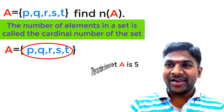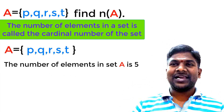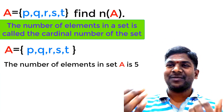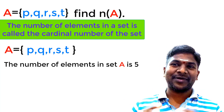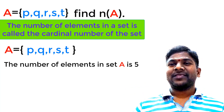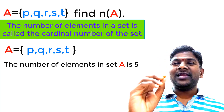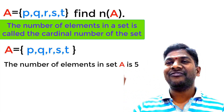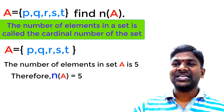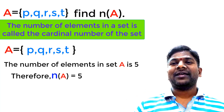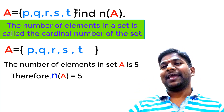The number of elements in set A is 5. What is the cardinal number of set A? Very good — the cardinal number of set A is 5. As we discussed, the cardinal number of set A is denoted by N of A. So we write N of A is equal to 5. This is the cardinal number of set A.